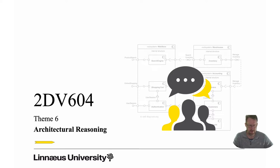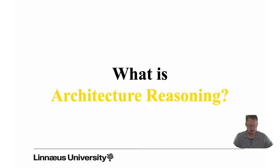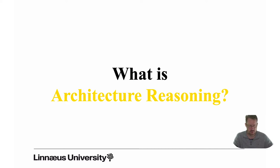Theme number six, 2DB604, on architectural reasoning. In this introduction lecture we will try to answer the question: what is architectural reasoning? As you will see, it can be several different things and you can also do it in several different ways. To start, we will try to put reasoning into a context.